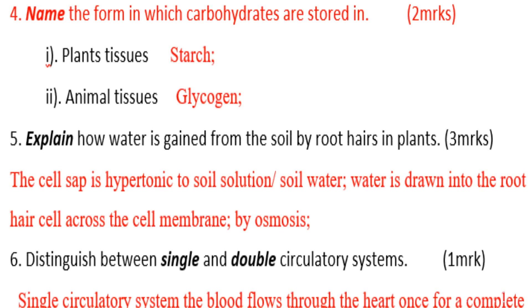Name the form in which carbohydrates are stored: number one, in plant tissues — starch; in animal tissues — glycogen.